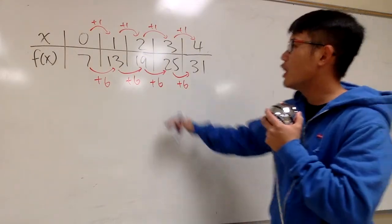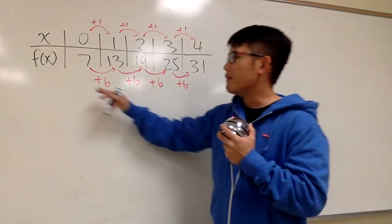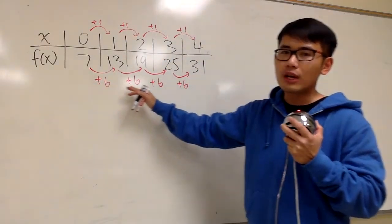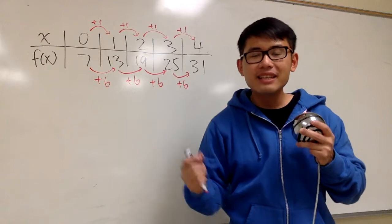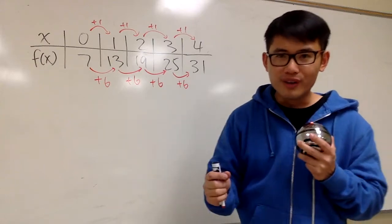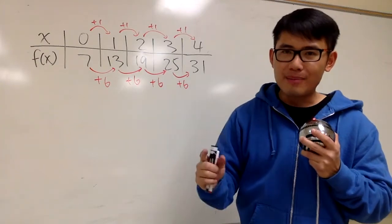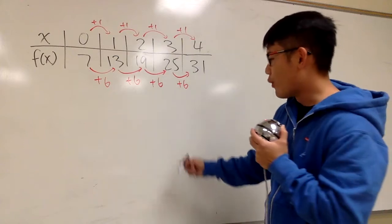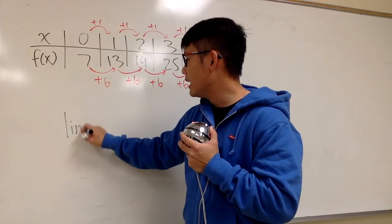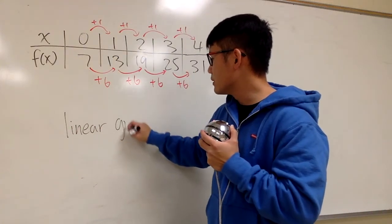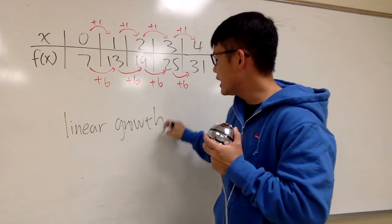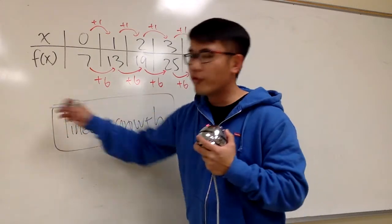As you can see, when x is going up by 1, the values for f(x) are going up by 6. We keep adding the same number over and over. Therefore, in this case, this is what we call linear growth.